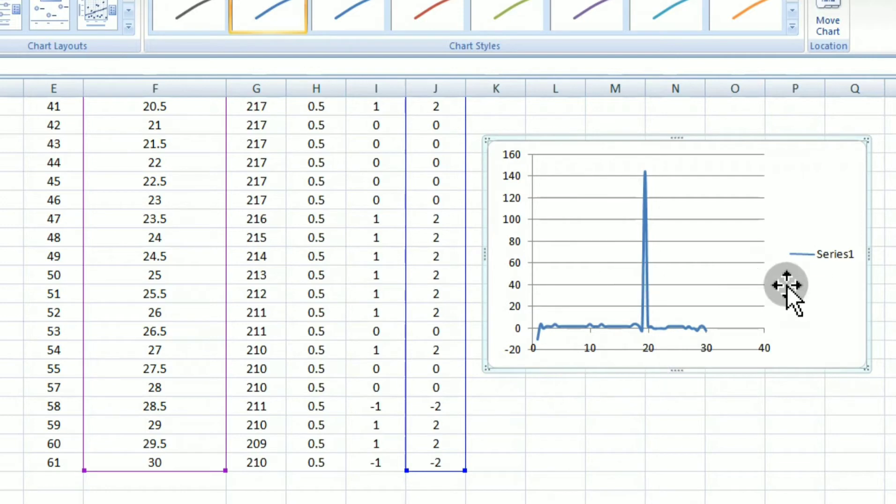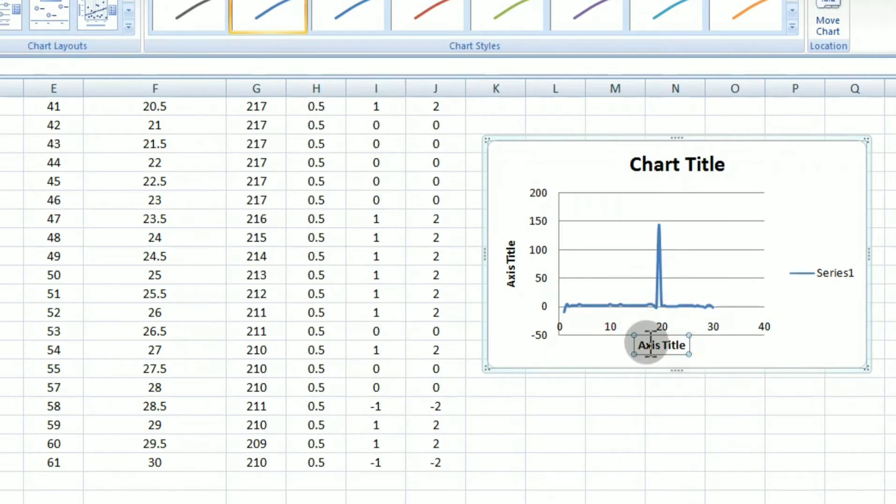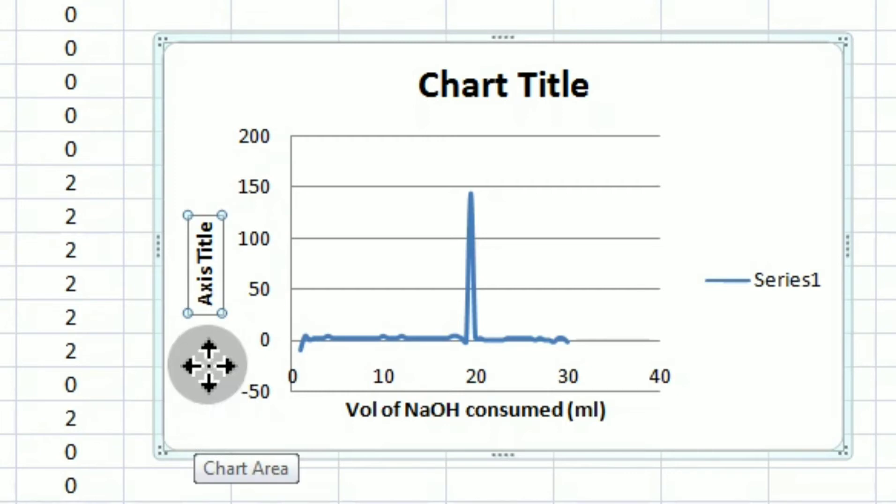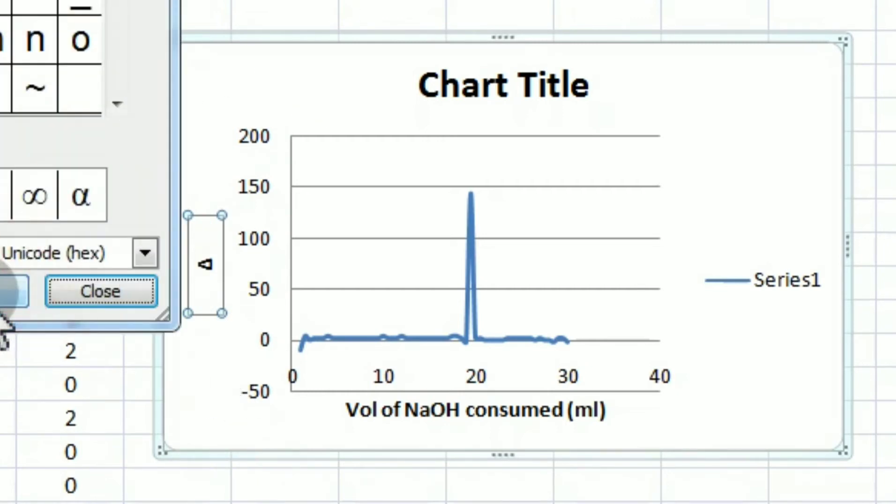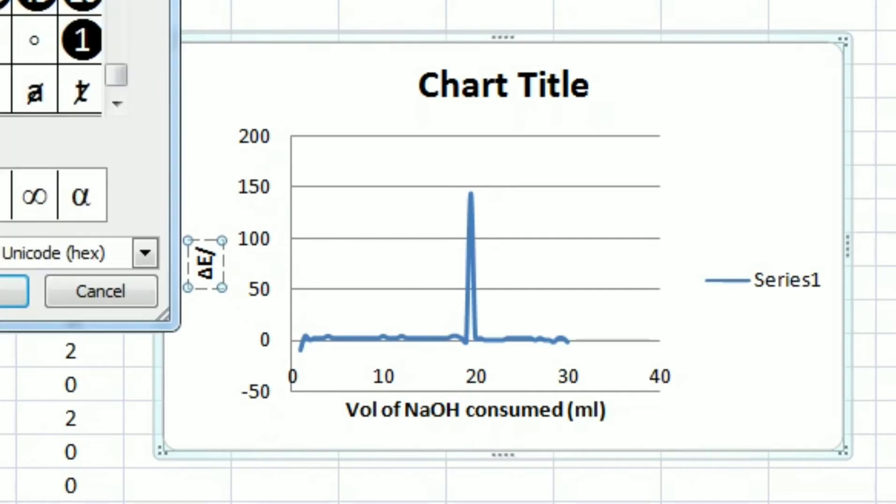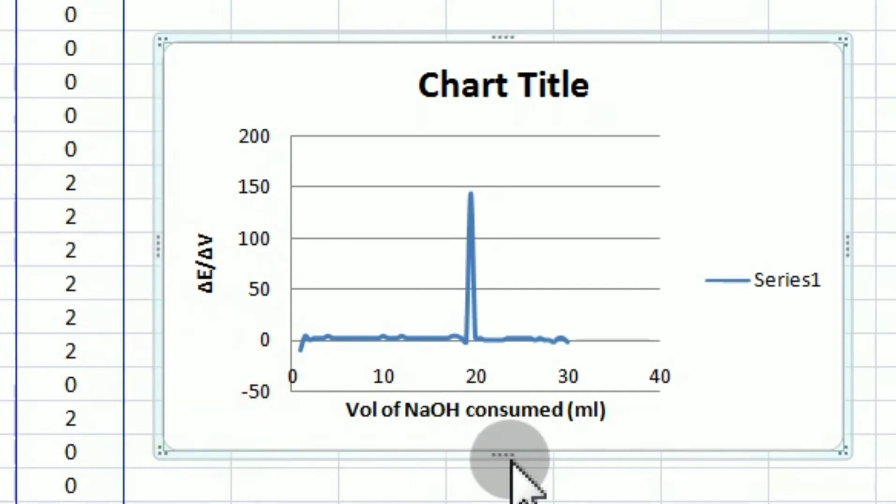So here, the tip of the peak, when you put the cursor at the tip of the peak, you can know the volume of sodium hydroxide that is run down to get the endpoint. You can also just note down or label the x-axis and y-axis using the Excel options. So the same thing is being done there. We have noted down the x-axis as volume of sodium hydroxide that is consumed. And then we are noting down the y-axis label as delta E by delta V. And you can also note down the chart title as potentiometric titration.